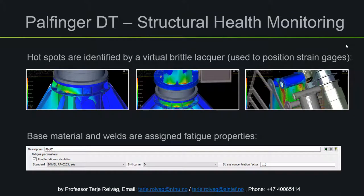A special purpose for this digital twin model is to enable predictive maintenance of the crane. That's why we developed a virtual brittle lacquer that identifies the hotspots on the crane, and we placed digital strain gauges on those hotspots. We can then calculate and visualize in the cloud, in real time, the strain and stress time histories and calculate the accumulated damage for predictive maintenance.